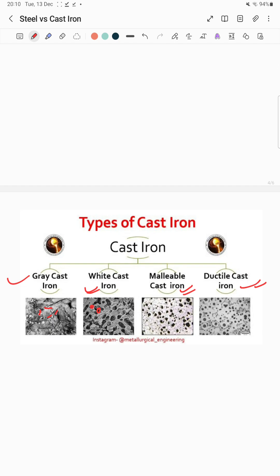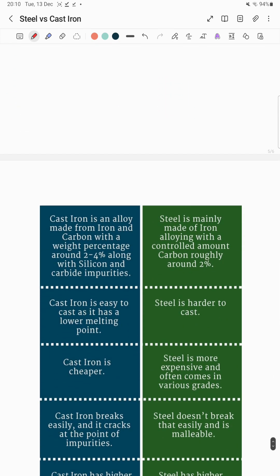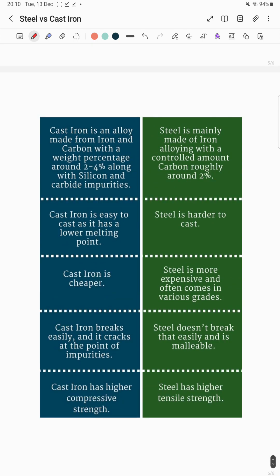By definition, cast iron is an alloy made from iron and carbon with a weight percentage of around 2% to 4%, along with silicon and other elements. Steel is mainly made up of iron alloyed with a controlled amount of carbon, roughly up to 2.14%.